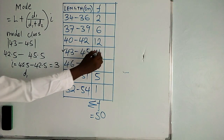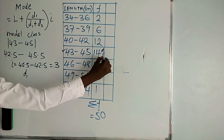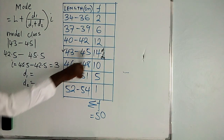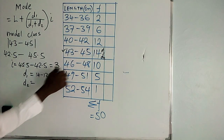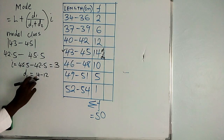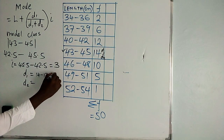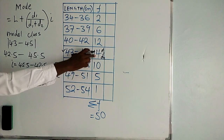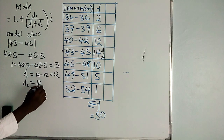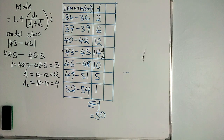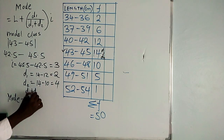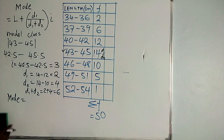Now for d1 and d2 — these are frequencies. Go to the frequency of the modal class, which is 14. d1 is above and d2 is below. d1 is the frequency of the modal class minus the frequency above it: 14 minus 12 equals 2. d2 is the frequency of the modal class minus the frequency below it: 14 minus 10 equals 4. So d1 plus d2 is 2 plus 4, which gives you 6.